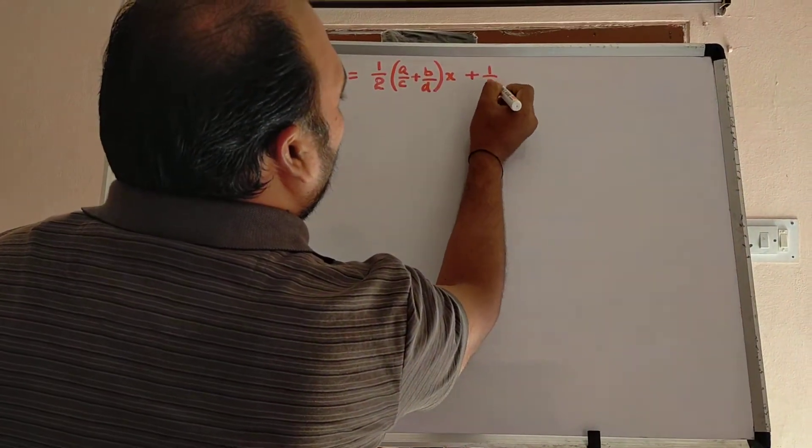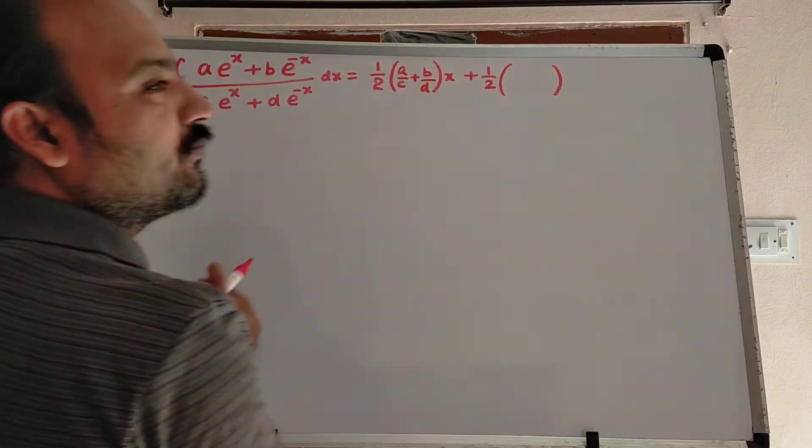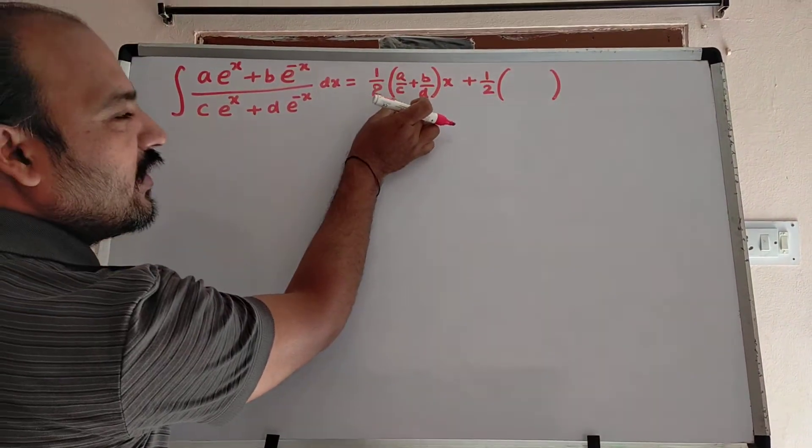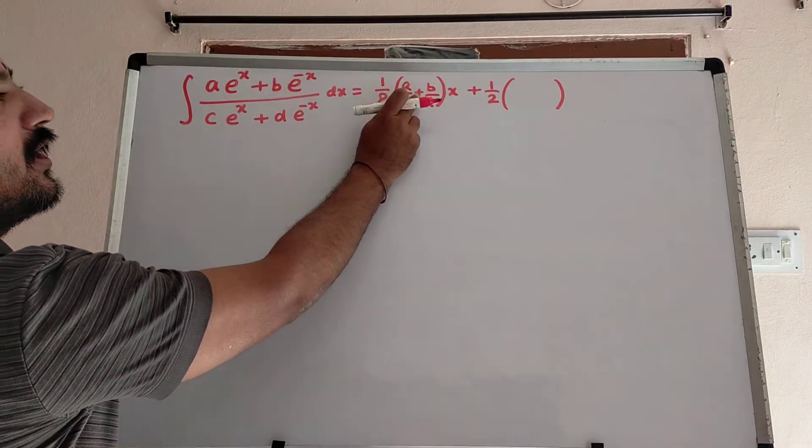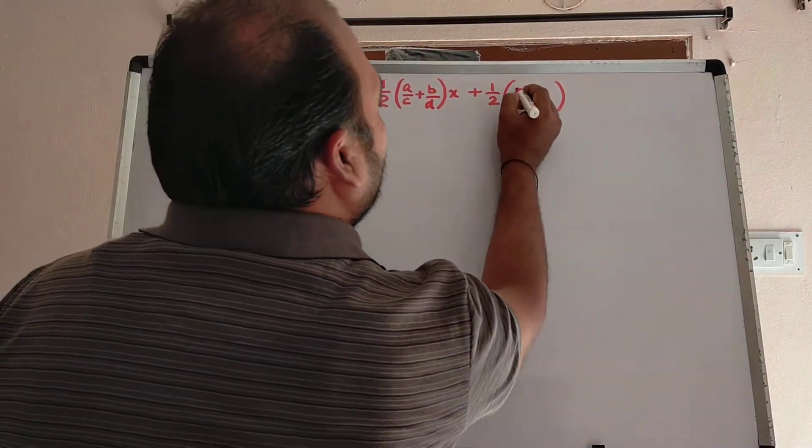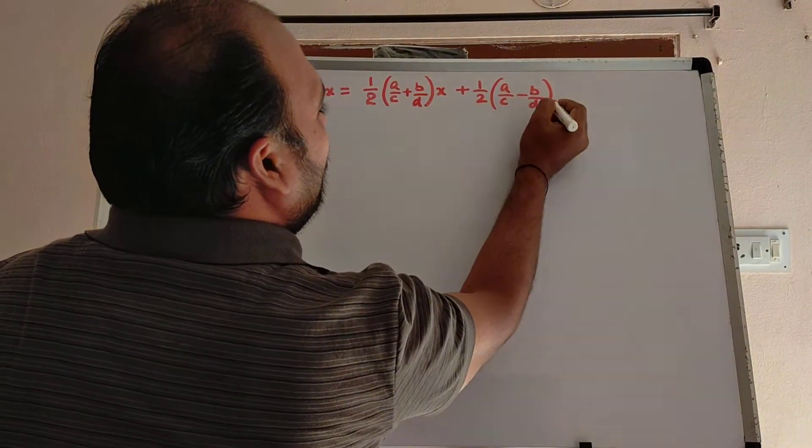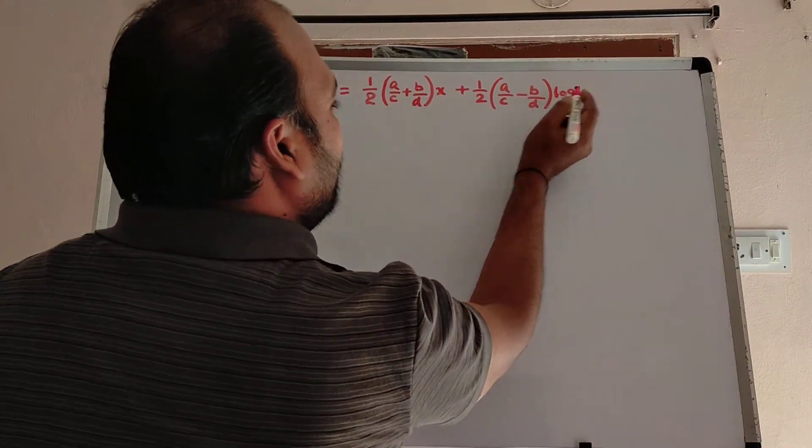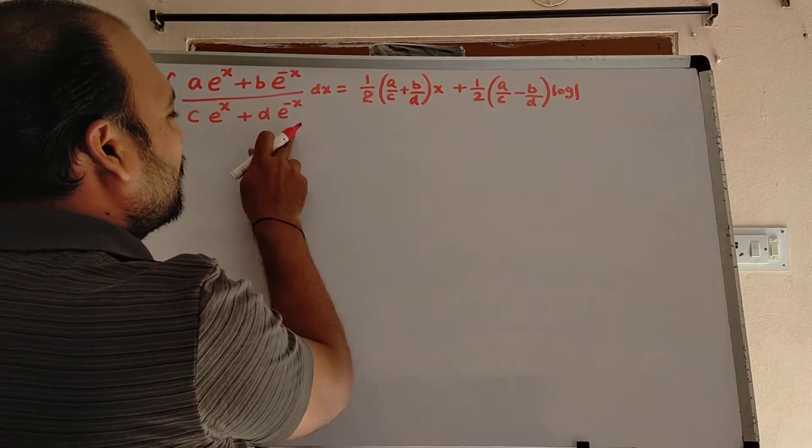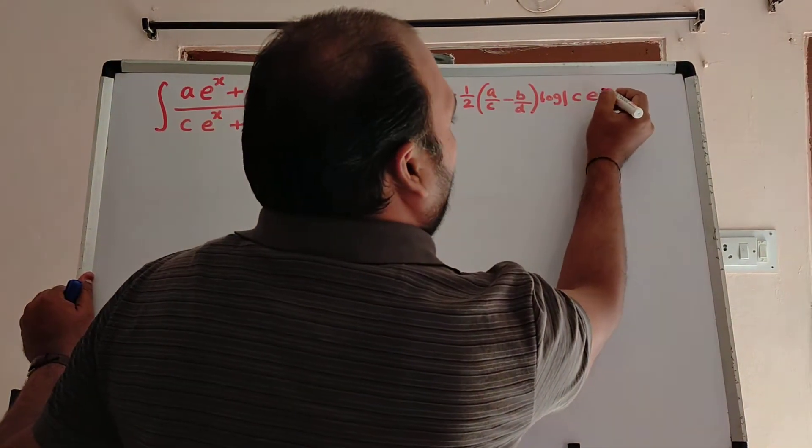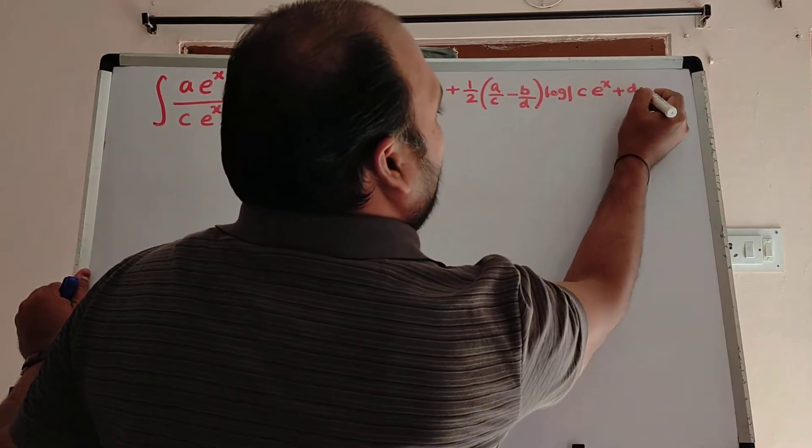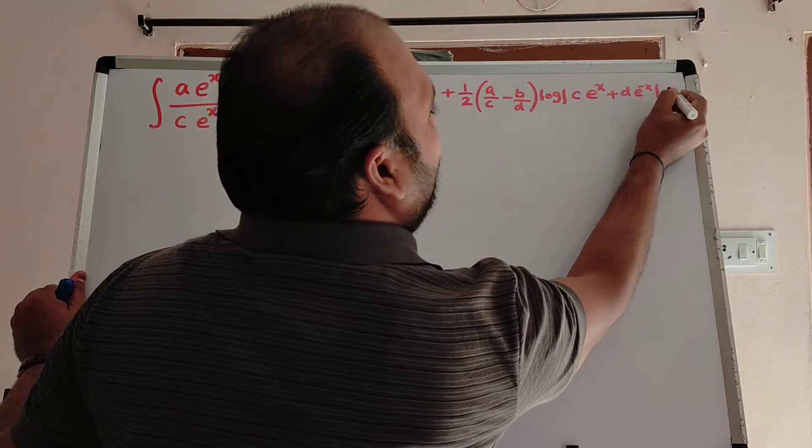First term answer is over, plus 1 by 2, again key bracket, same bracket value you have to write but here sign you have to change. a by c minus b by d into log of denominator, whatever the denominator is there here, c e power x plus b e power minus x plus k.